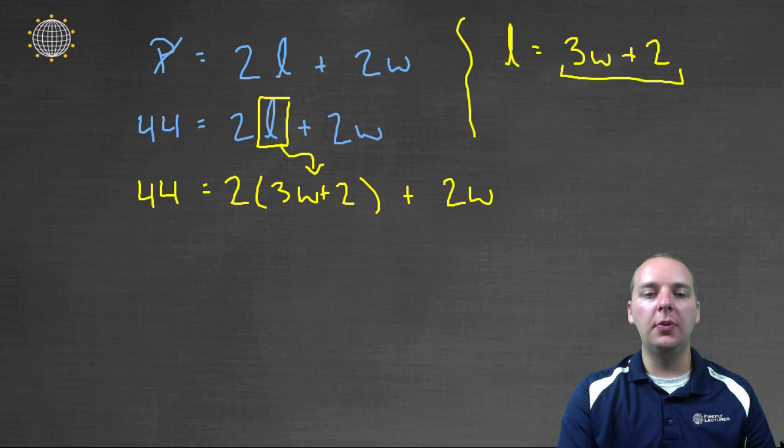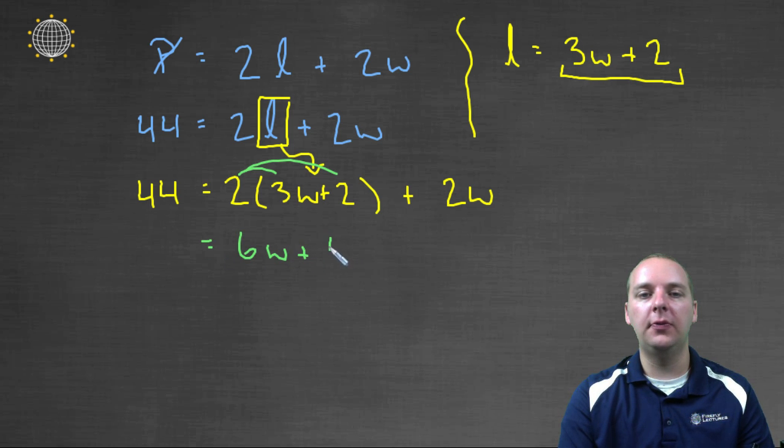So from here I think we can just go ahead with our natural steps of simplifying both sides, doing things like six W plus four, and then plus two W equals forty-four. I see a few like terms, I've got a two W and a six W that can combine to be an eight W plus four equals forty-four.